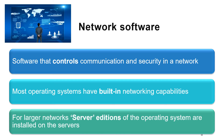Network software is the last component to discuss in a LAN. You need special software to allow the network to operate — it controls the communication and the security in your network. Most operating systems have built-in networking capabilities; for example, Windows allows you to connect about 10 computers to each other. But if you need more than that, you'll need a special network operating system, called the server editions.